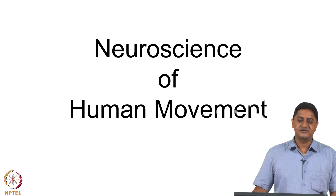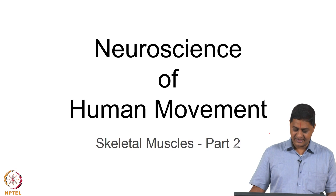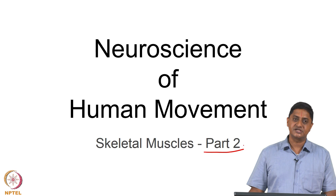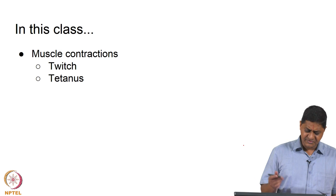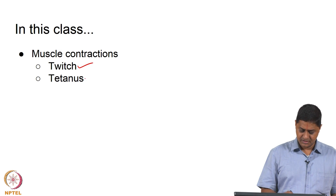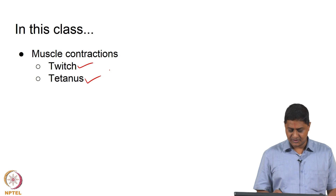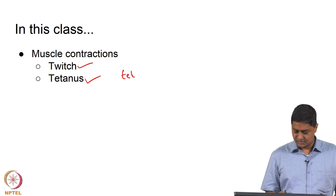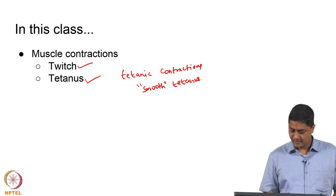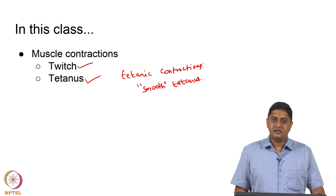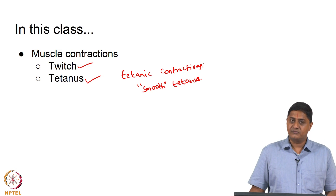Welcome to this class on the neuroscience of human movement. In this class we will be talking about skeletal muscles — this is Part 2 of our discussion on skeletal muscles. We will be covering types of contractions: twitch contractions and tetanic contractions, also called smooth tetanus. Essentially each contraction is not necessarily smooth, but when multiple contractions add up is part of today's class.